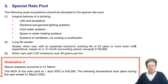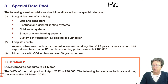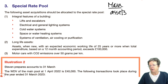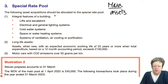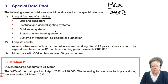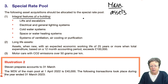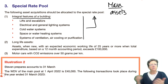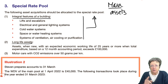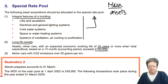The special rate pool. We've got a main pool with all our general assets in it, but some assets have to go into the special rate pool. These are: any integral feature of a building — lifts, escalators, lighting systems, water systems, heating systems. They're not the building themselves but they're integral and they're long-life assets. Any long-life asset with a working life of more than 25 years where the expenditure is more than £100,000 goes in the special rate pool. And don't forget cars with over 50 grams per kilometre emissions.